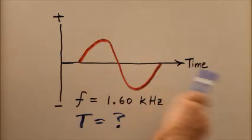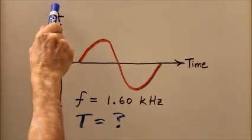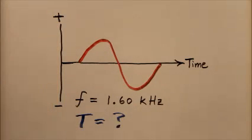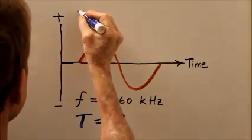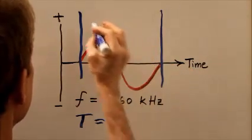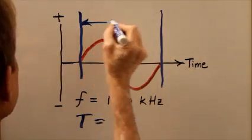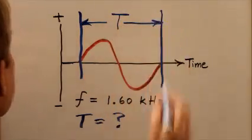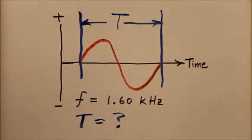This is the wave, time going off like that, voltage positive going up, negative going down, and you're familiar with all that. The period is the length of time that it takes for exactly one cycle to be completed.